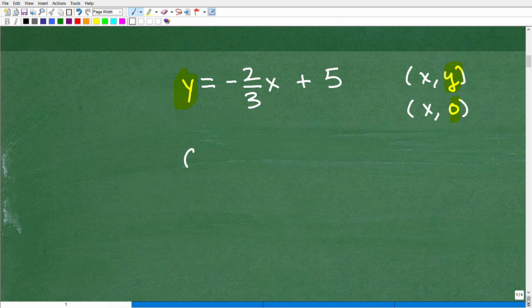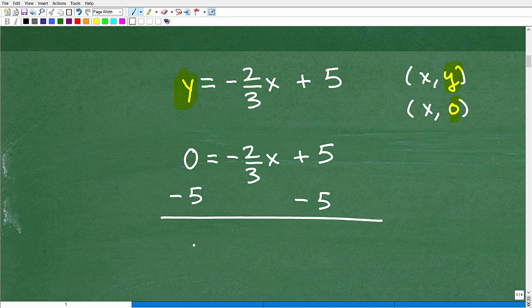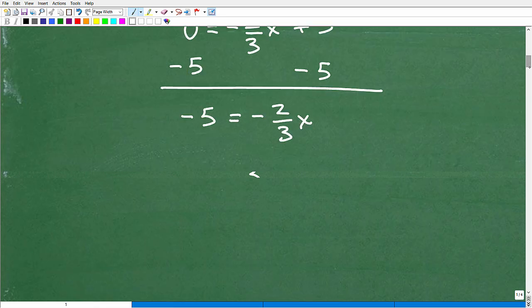So we're looking for some x, y point, but the specific point, the x-intercept, is where y is equal to 0. I already know that. And now I need to know where x is. So I'm going to plug in 0 for y and solve for x. So that's 0 for my y is equal to negative 2/3 x plus 5. So, yes, this part of the problem is going to involve you having some basic equation solving skills.